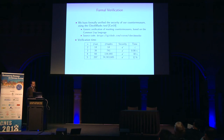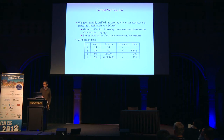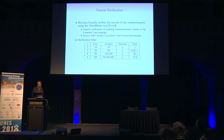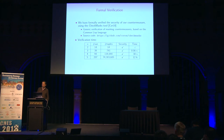We also performed formal verification of the countermeasure using the checkmask tool, which performs generic verification of masking countermeasures. It is based on the common list language, well-suited to formal manipulations, and the verification source code is short and public. The verification looks at all possible subsets of N-1 variables, so complexity is doubly exponential in N, limiting verification to small values up to N equals 5. Still, this provides confidence in the correctness of the security proof.